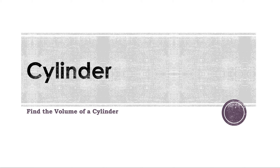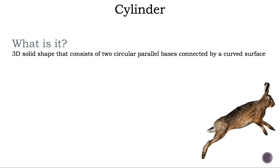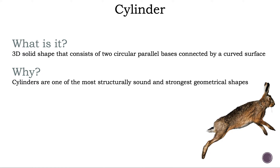Cylinder. Find the volume of a cylinder. What is it? A 3D solid shape that consists of two circular parallel bases connected by a curved surface. Why? Cylinders are one of the most structurally sound and strongest geometrical shapes.